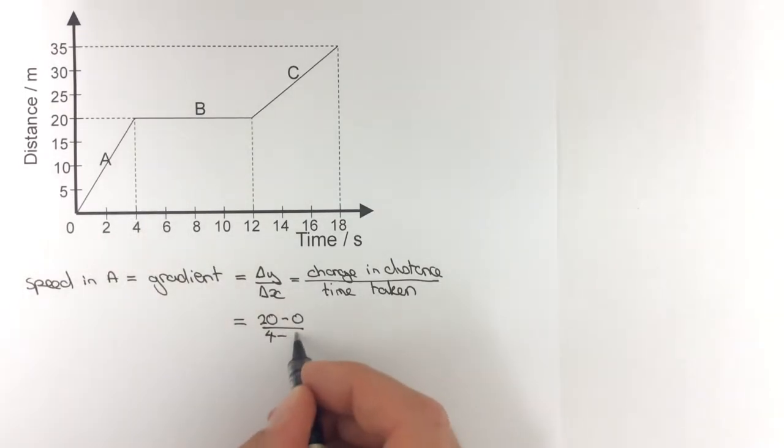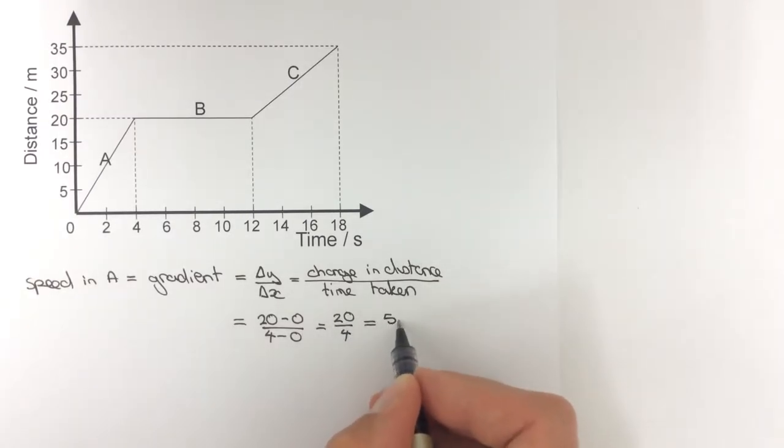which gives me 20 over 4, which is 5 meters per second.